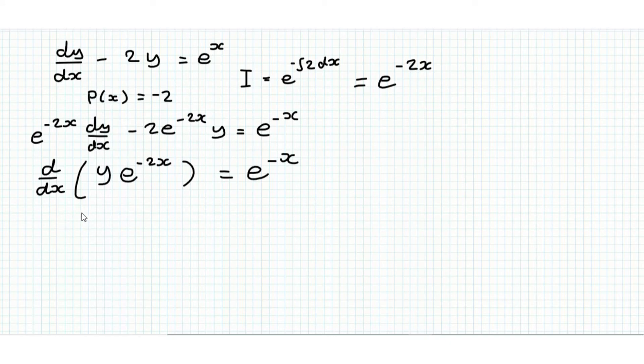Now we integrate both sides with respect to x. And that gives us y e to the minus 2x is equal to minus e to the minus x plus c. Remember, just put the plus c on one of the sides.